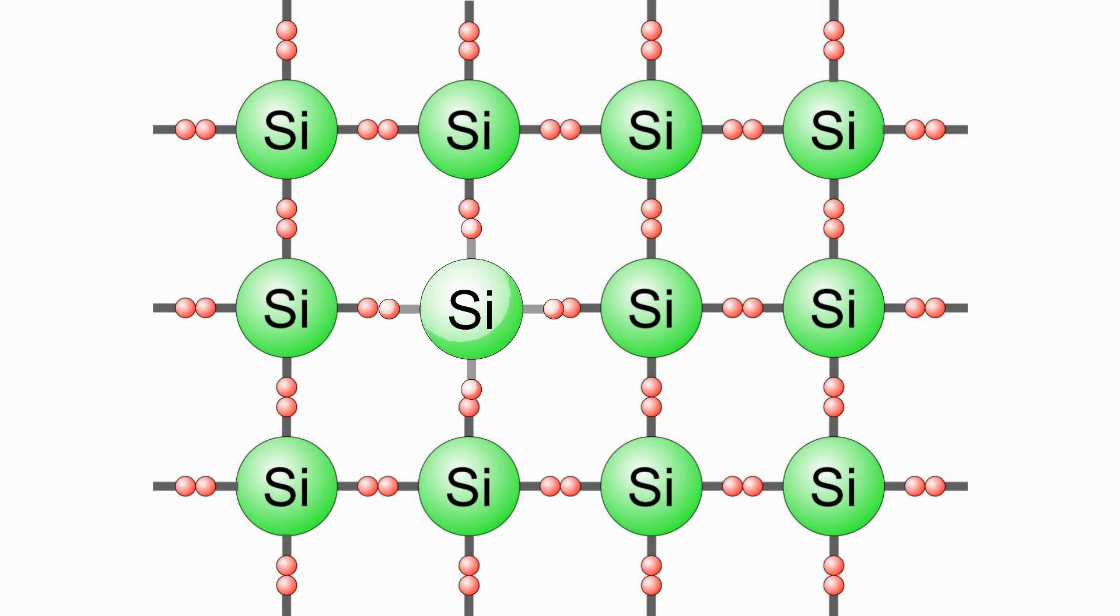Suppose, though, we remove a silicon atom and replace it with an arsenic atom. In semiconductor processing, this is called doping. Arsenic atoms have five electrons in their valence band. Four of these valence electrons form bonds with neighboring silicon atoms, just like the silicon atom we removed. The fifth arsenic atom electron is not bonded.